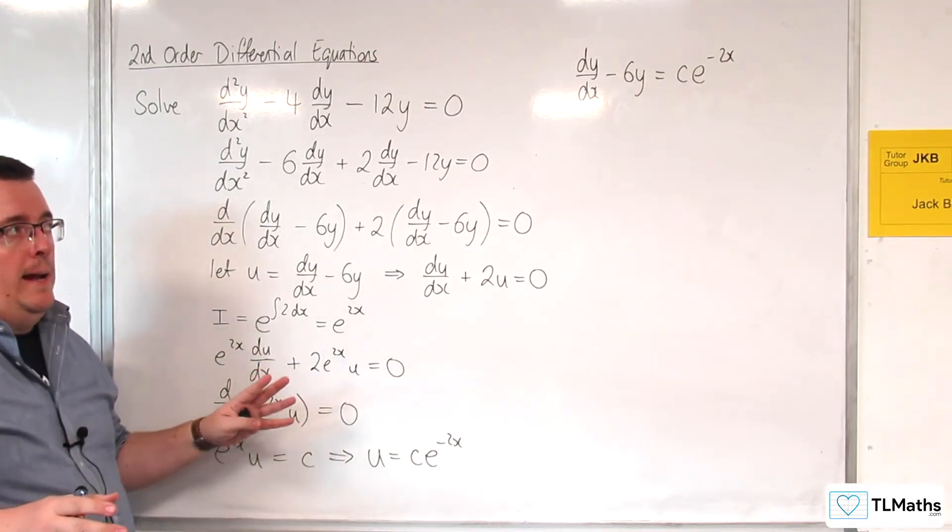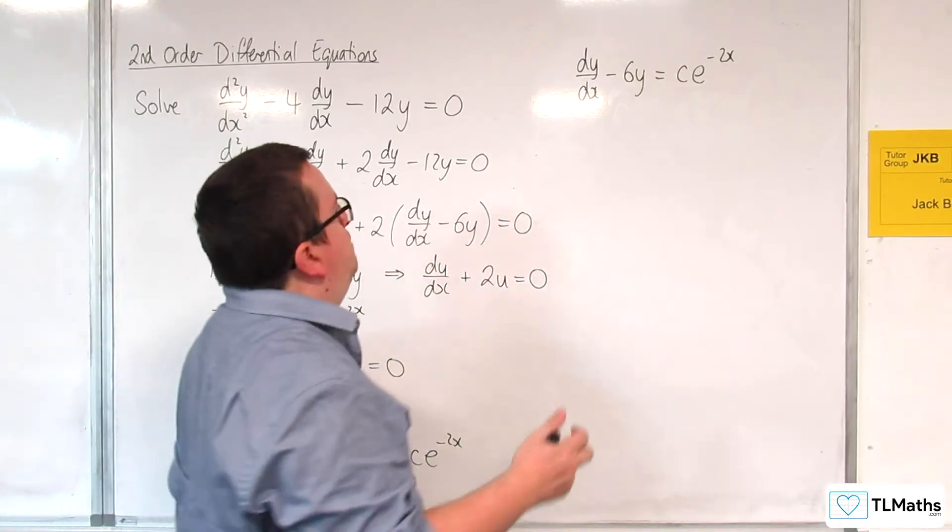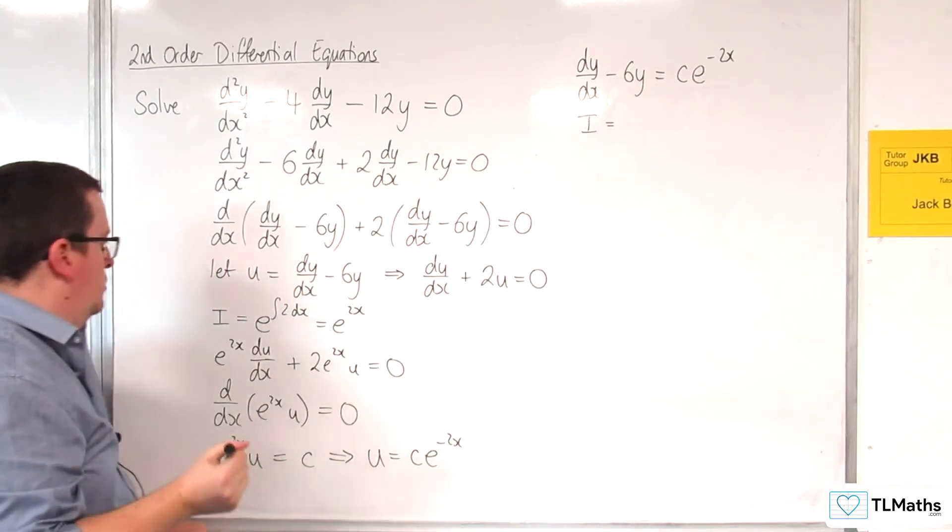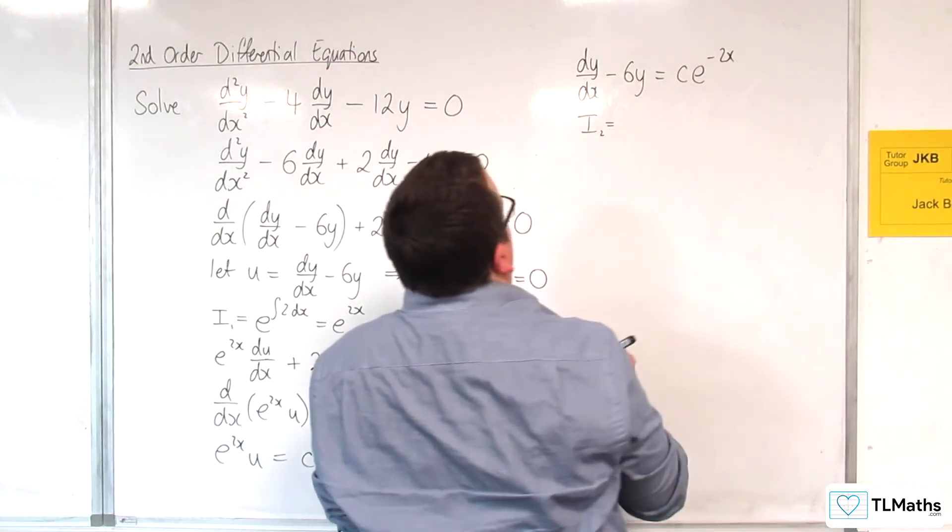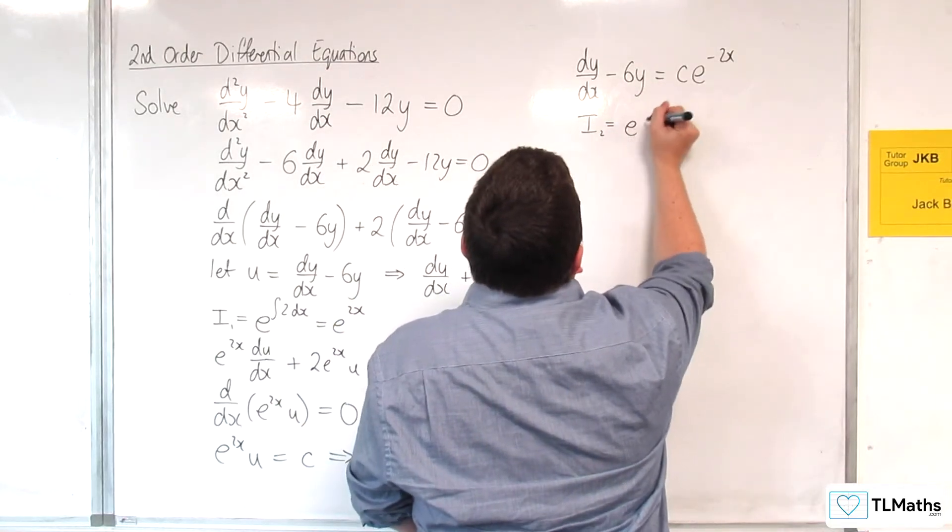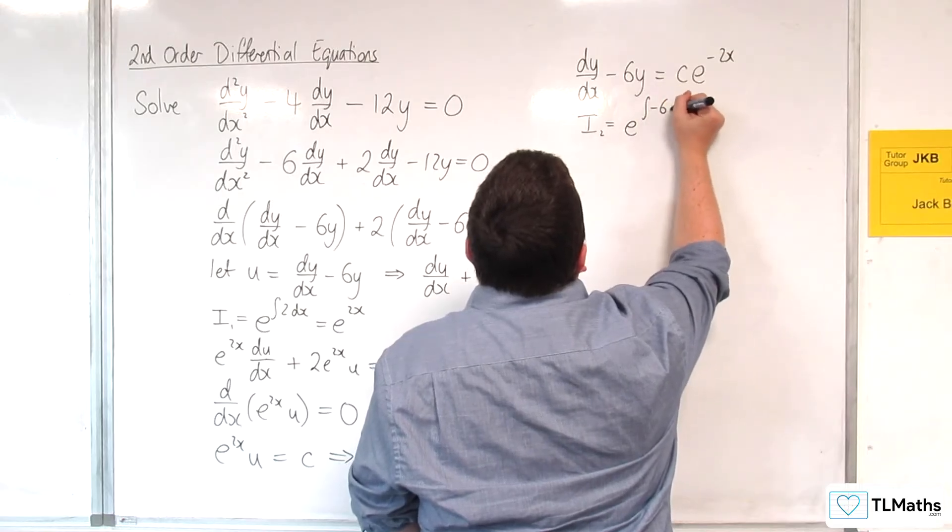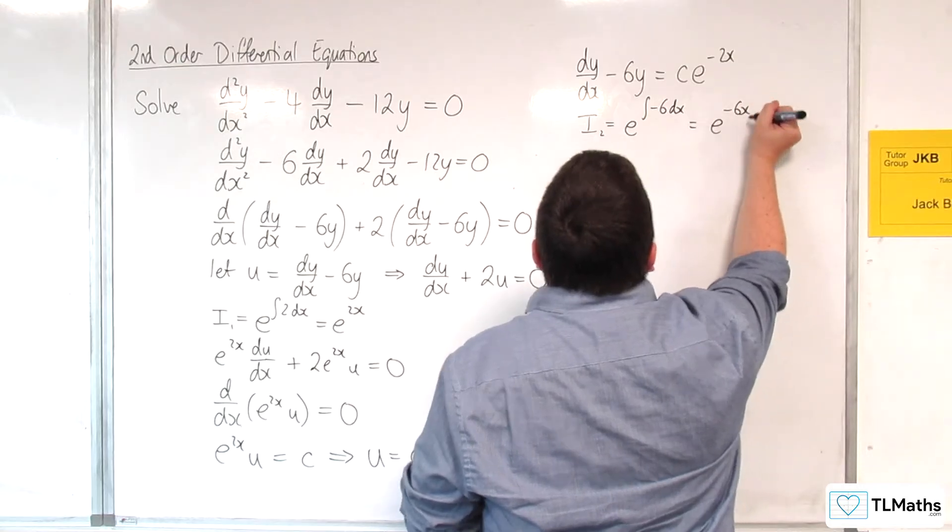I can't do it by separation of variables, this one, but I can use an integrating factor. So I'm going to have another integrating factor. I guess I should call that i₁, and I'll call this i₂. And that's going to be equal to e to the power of the integral of -6dx, which is equal to e^(-6x).